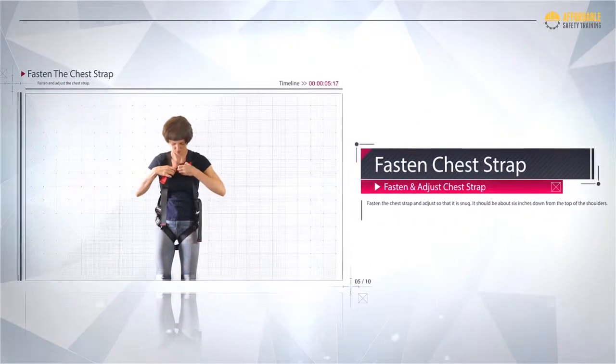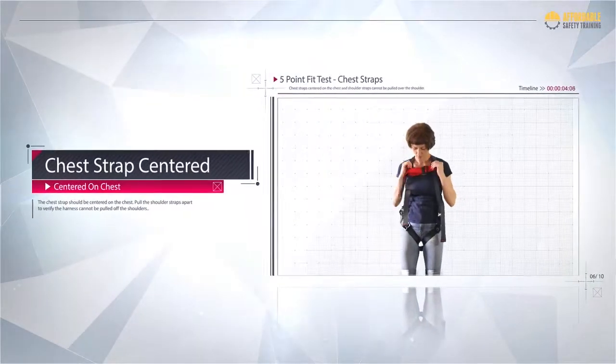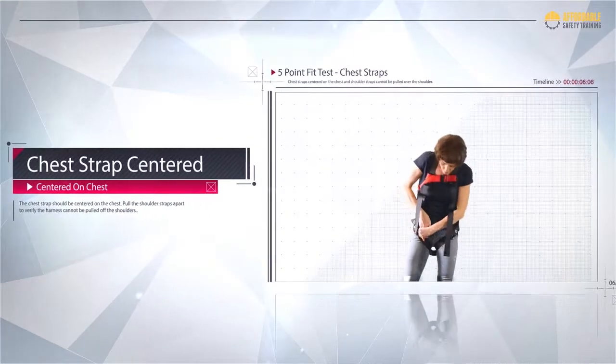Start the five-point harness fit test. One: the chest strap is centered on the chest. The shoulder straps cannot be pulled over the shoulders.